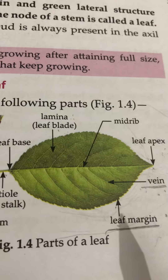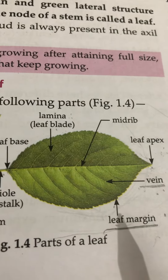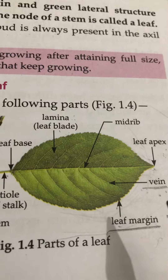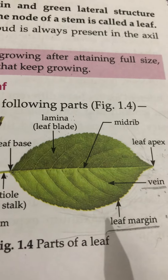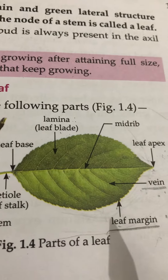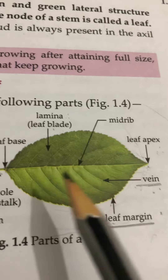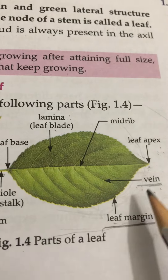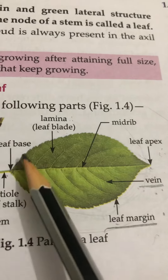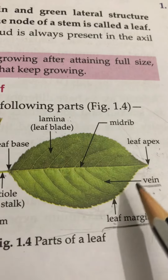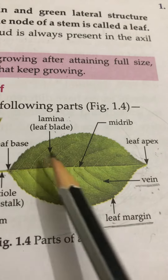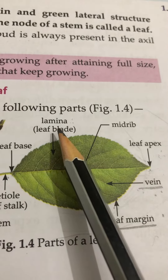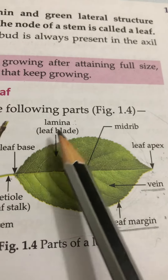This is green due to the presence of a pigment called chlorophyll. This whole green part is called leaf lamina, or leaf blade.